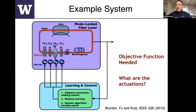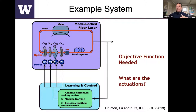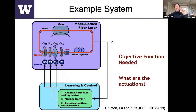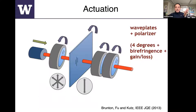To tune it automatically, you need an objective function — what does it mean for this laser to be operating well? The actuations are the wave plates and the polarizer: setting their angles. The objective function relates to the output of the laser cavity — we can look at the spectrum and the energy. Extremum seeking control will learn to use these features to self-tune.